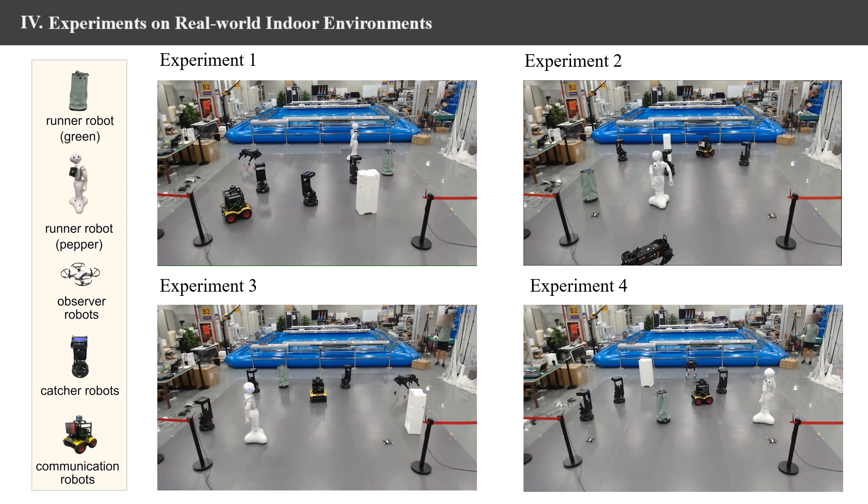We also demonstrate some real-world experiments. The runner robot takes the opportunity to run out of the potential encirclement of the two robots. The obstacle blocks the runner robot, so it stops moving.